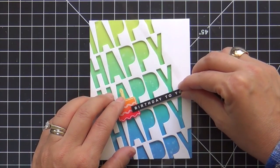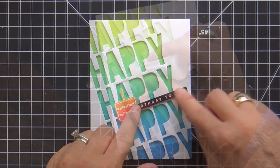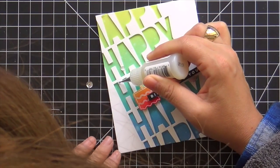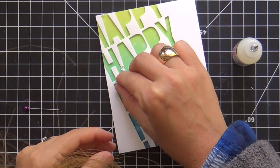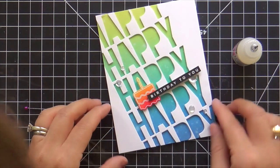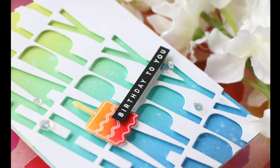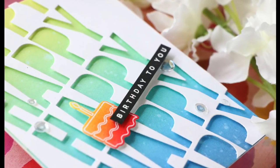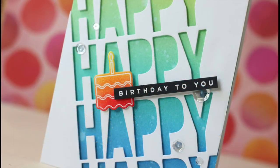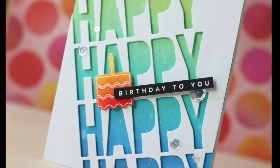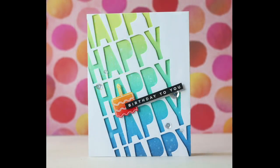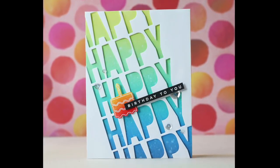I'll pop up the cake, pop up the sentiment strip. We're popped and locked, ready to embellish. Putting on some sparkling clear sequins—I've got three different sizes—using Glossy Accents. This card is finished. Is this not happy, colorful, fun? Gonna bring joy to everyone on their birthday. Thank you so